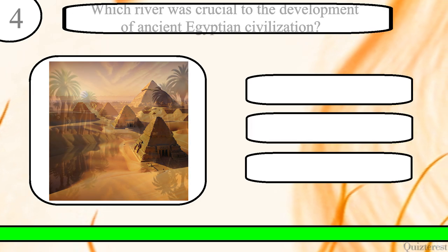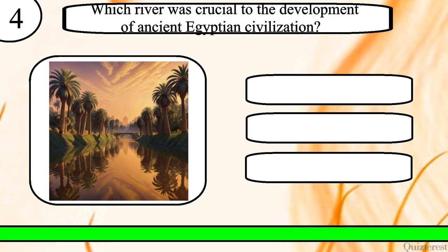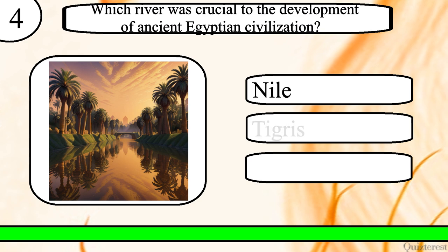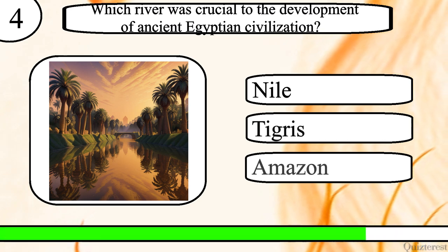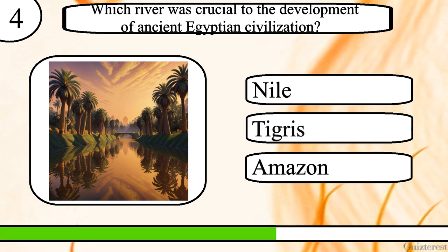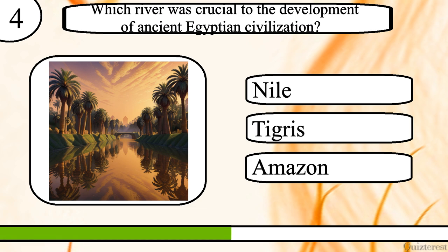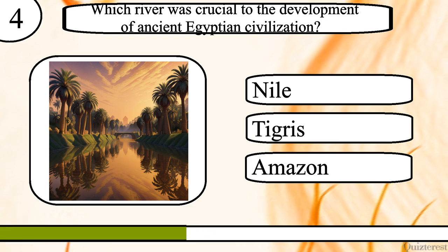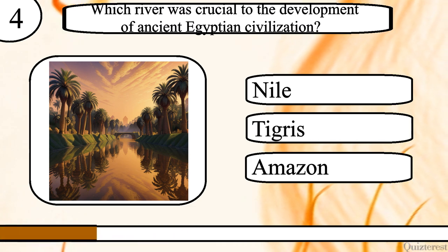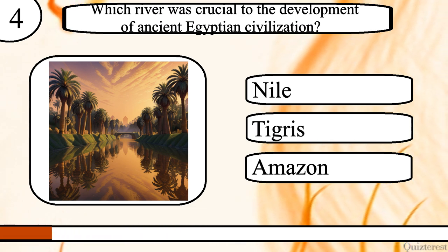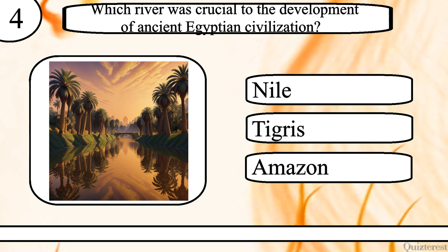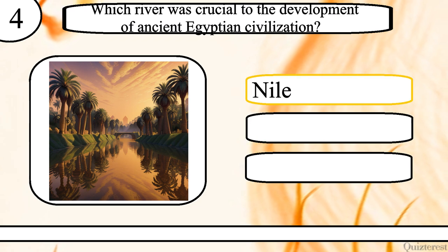Question 4. Which river was crucial to the development of ancient Egyptian civilization? Nile, Tigris or Amazon? The correct answer is Nile.